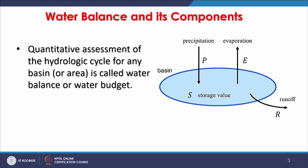Precipitation is the input; evaporation or evapotranspiration is the loss; S is storage; and there may be runoff that leaves the system. Considering a conceptual basin, these are the plus values, minus values, and storage. A quantitative assessment of the hydrologic cycle of any basin or area is called a water balance or water budget, and for each basin it tells us exactly what is required.